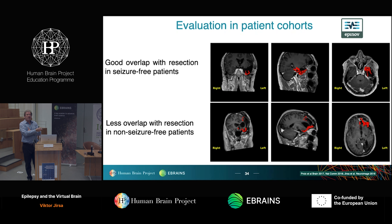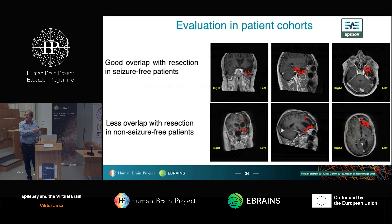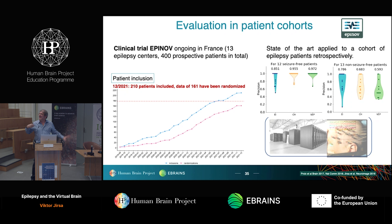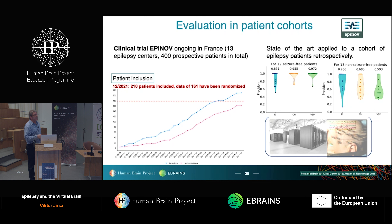Here you see an example where the post-surgical MRI corresponds quite well to the heat map we proposed, and an example where it corresponds less well. For the prospective data, this is currently the inclusion — we are halfway. About 250 patients as of December. In order to have statistically significant power to make a statement about the contributions of this new technology, we need about 400 patients.